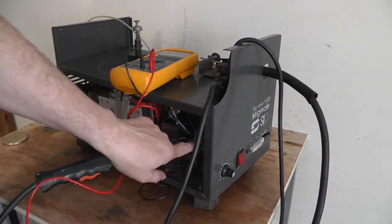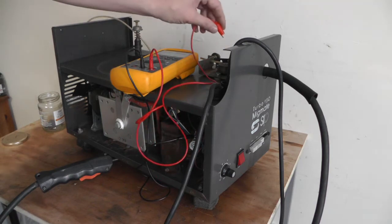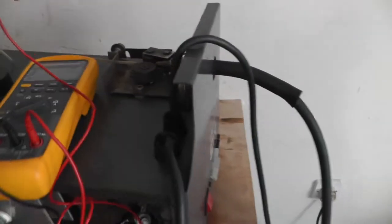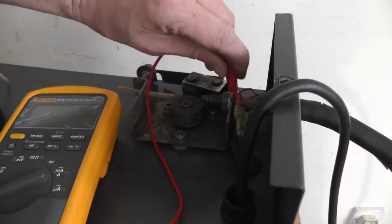I'm putting one lead onto the outlet of the choke and putting the other lead on up here where the electrode to the gun connects. So I'm just going on this metal really.